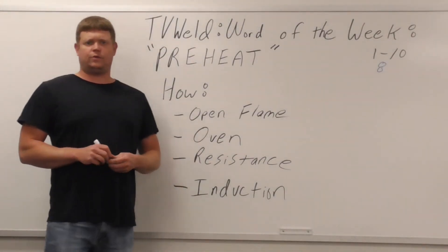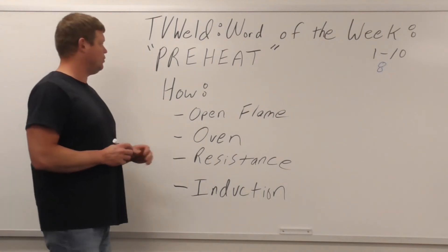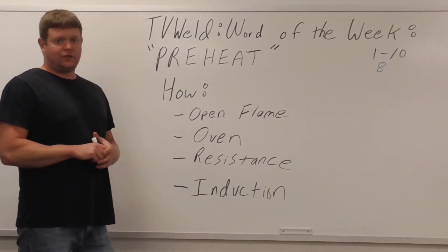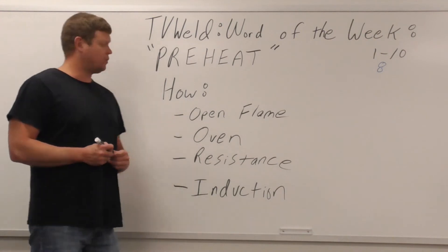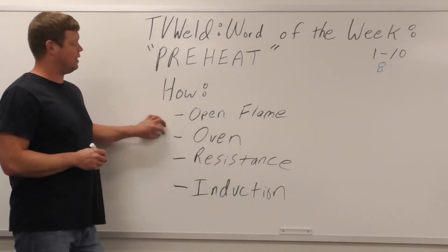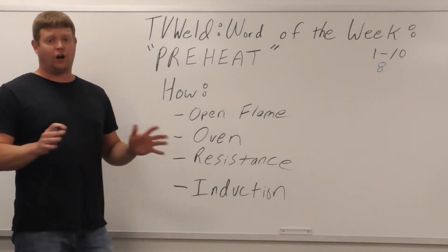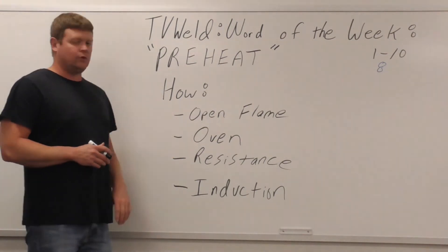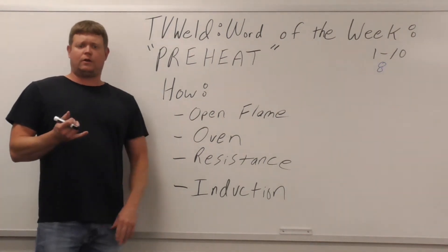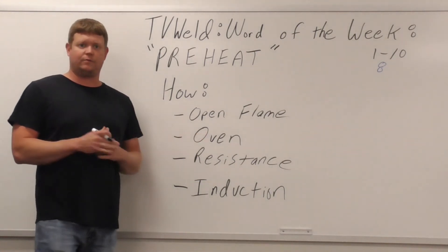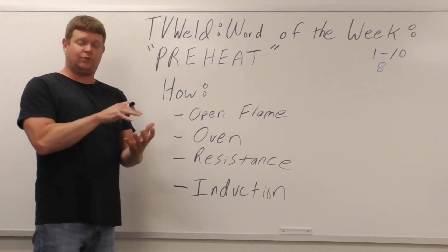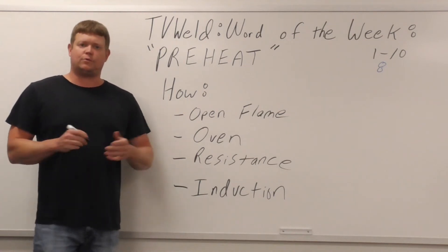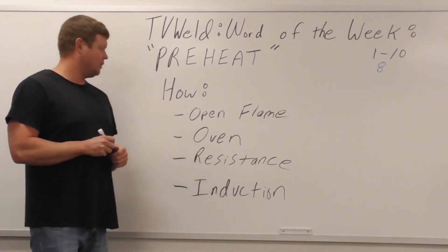So we went over when and why — here's how you do it. Because welders have access to torches, the first method is probably the most obvious and most used by far: open flame, either with a rosebud or a torch. You blow it onto the part and it heats it up. Then you'd probably test the temperature with a temp stick or a digital thermometer.